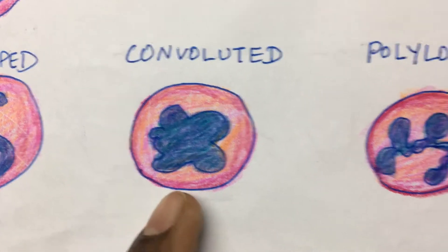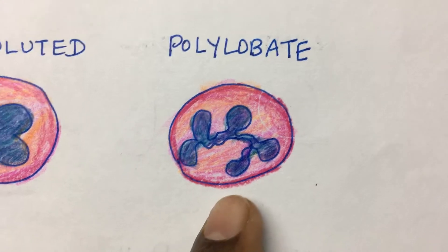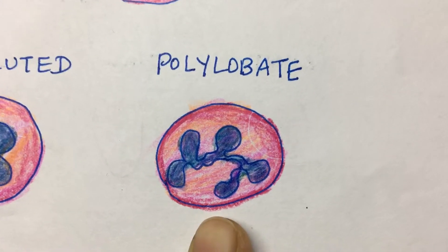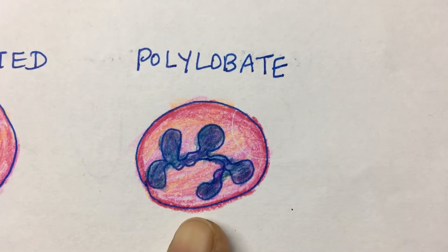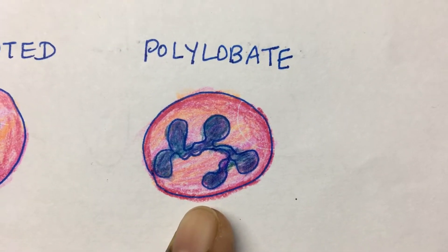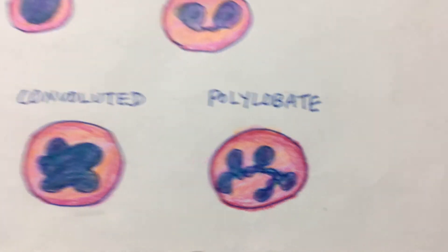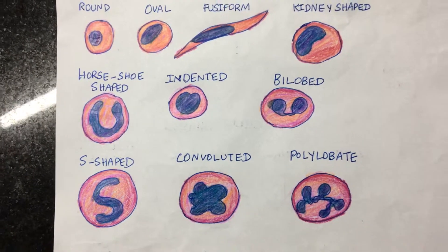And here you have the polylobate nucleus. The polylobate nucleus is commonly seen in mature neutrophils and megakaryocytes. Hope this video was informative.